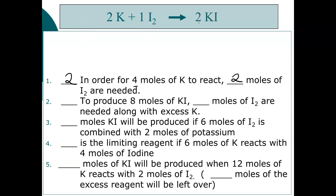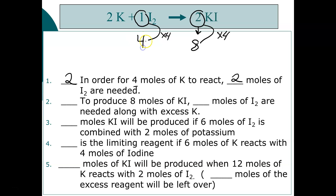Next question: to produce eight moles of KI, how many moles of I₂ are needed along with excess potassium? I want to make eight moles instead of the two in the recipe. One mole of iodine makes two moles of potassium iodide, so I need to multiply by four — I end up with four moles of iodine needed.